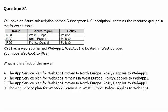Question number 51. You have an Azure subscription named Subscription 1. Subscription 1 contains the following resource groups: RG1 is in the Azure region West Europe and has Policy 1. RG2 is in North Europe and has Policy 2. Resource Group 3 is in Azure region France Central and has Policy 3.